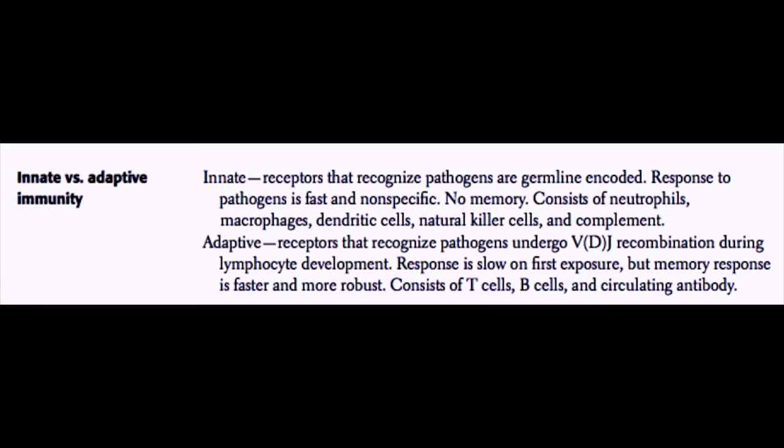With the innate response, the receptors that recognize pathogens are germline encoded — they don't change. The response to pathogens is fast and nonspecific. The innate system has no memory and consists of neutrophils, macrophages, dendritic cells, natural killer cells (which are lymphocytes), and complement.